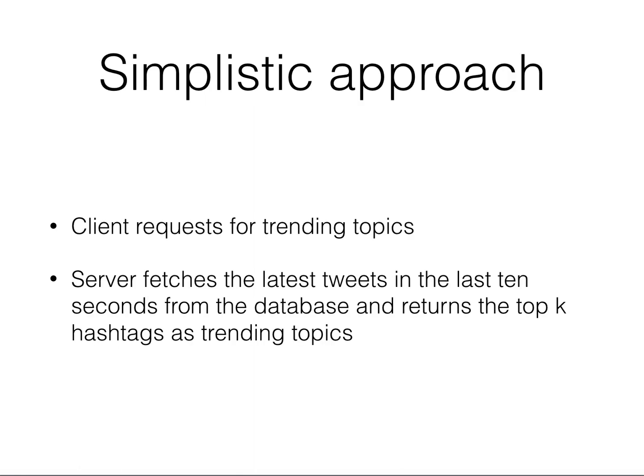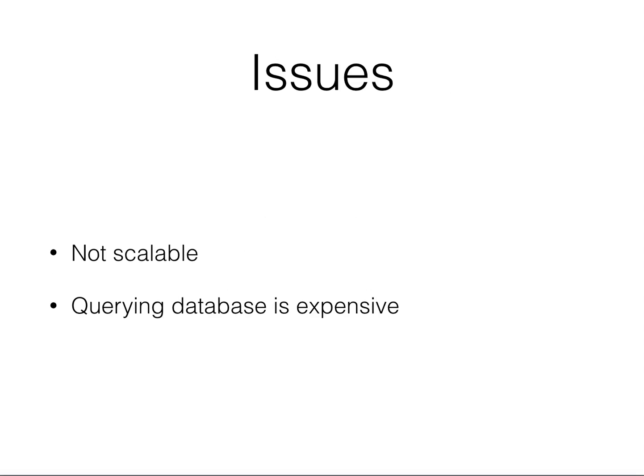Now what would be the simplistic approach? A simplistic approach would be: the client requests trending topics, the server fetches the latest tweets in the last 10 seconds from the database, and returns the top K hashtags as trending topics. This is a very simplistic approach. The issues: first, with just one server it's not scalable. Second, querying the database each time — in a second you can get millions of requests — you end up querying the same tweets repeatedly for those 10 seconds, which is expensive.